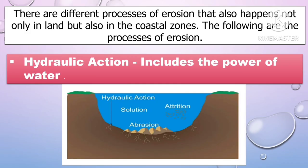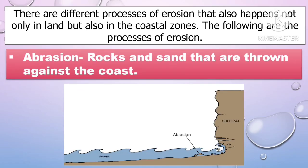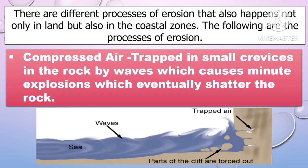There are different processes of erosion that happen not only on land but also in coastal zones. The first one is hydraulic action, which includes the power of the water. Another example is abrasion, where rocks and sand are thrown against the coast. Another process of erosion is compressed air, which is trapped in small crevices in the rock by waves, causing minute explosions which eventually shatter the rock.